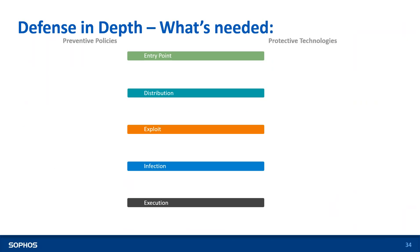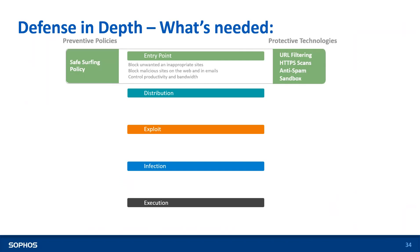Now, what is the defense required at each layer? For Entry Point prevention: use URL filtering to block unwanted and inappropriate sites; make sure to scan HTTPS traffic as well. Even secured websites should be scanned for potential malware. Use an anti-spam engine to reduce spam mail. Use a sandboxing solution to analyze your data and only allow content confirmed to be clean.